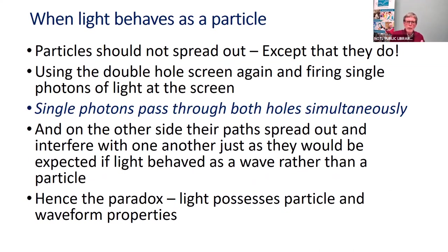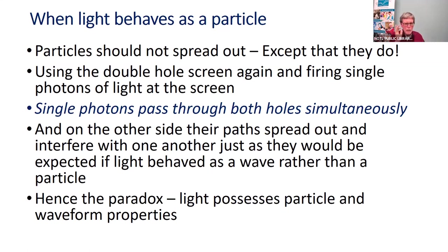How does light behave as a particle? You'd think that if you had a gun and could fire electrons one at a time — single shots — a particle would head to the target and go through just one hole. But the paradox: if you fire single electrons, each one at a time, each electron manages to go through both holes. Furthermore, if you repeat it enough times, they actually interfere with one another, just like the waveform pattern. So light, whether particle or waveform, actually has dual properties — and this includes the subatomic level.